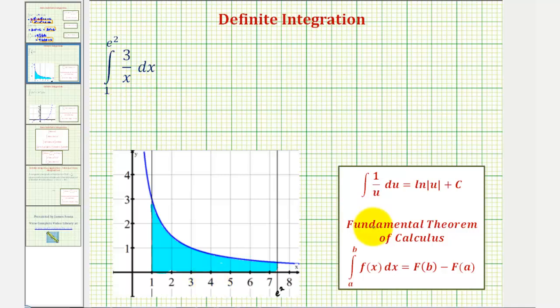And we'll evaluate this using the fundamental theorem of calculus stated here. So for the first step, we'll find the anti-derivative function, which would be big F. Or in this case, we may want to factor out the three first and write this as three times the integral of one divided by x from one to e squared.